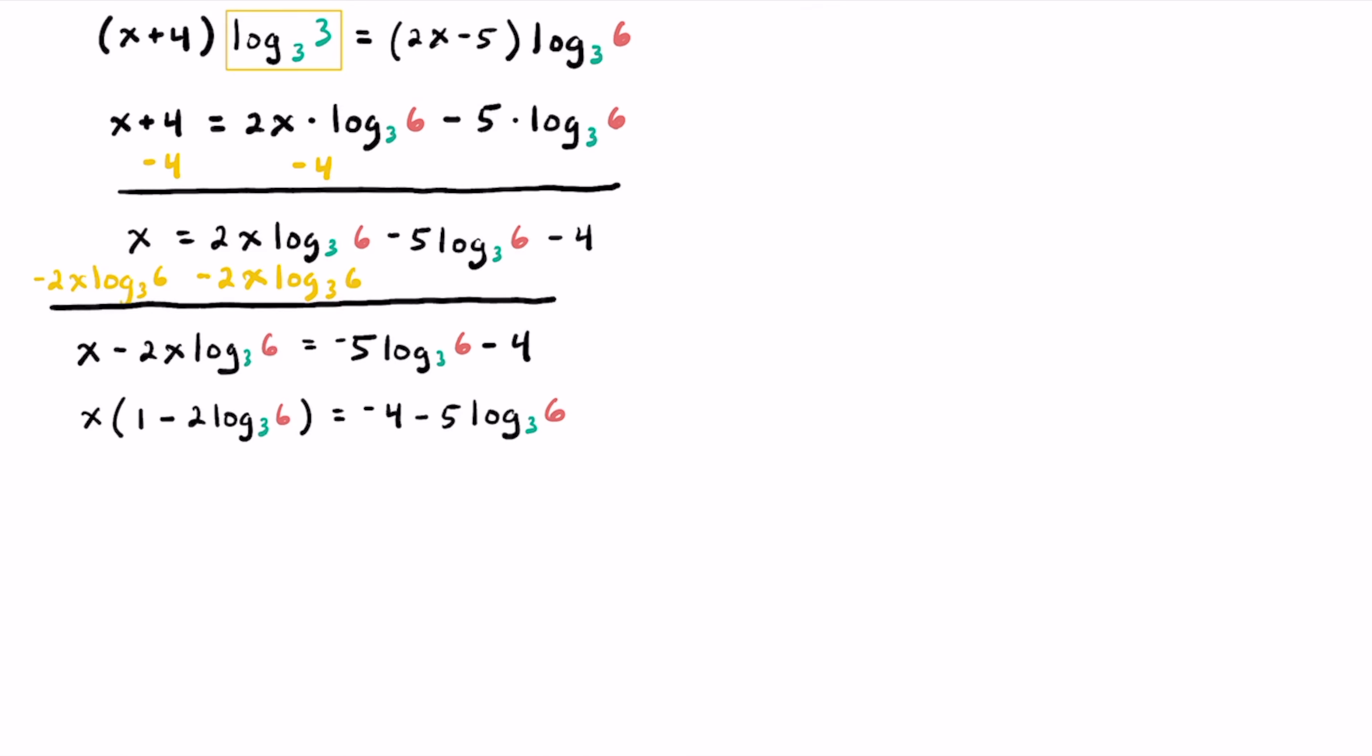Good news for us, we only have x in one location now. All we have to do is get rid of this 1 minus 2 times log base 3 of 6, and we can do that by dividing both sides by that value. Dividing both sides of the equation by that 1 minus 2 times log base 3 of 6, we've now isolated x completely.